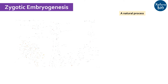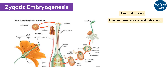Naturally, during pollination when pollen fuses with the ovule to form a zygote, this zygote undergoes several rounds of division and differentiation events to form an embryo. As the embryo is derived from the zygote, it is termed as a zygotic embryo and the process is called zygotic embryogenesis. The embryo has the ability to regenerate shoot and root and even the entire plant.